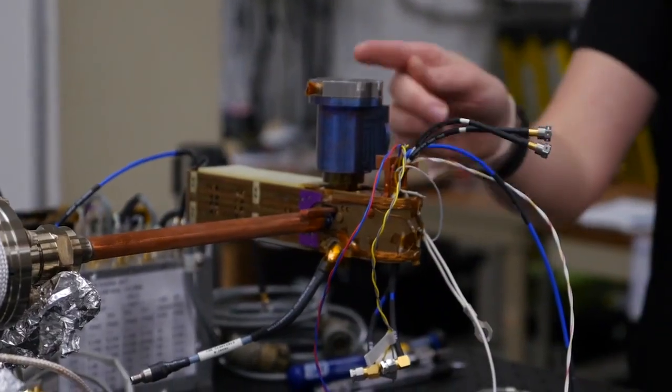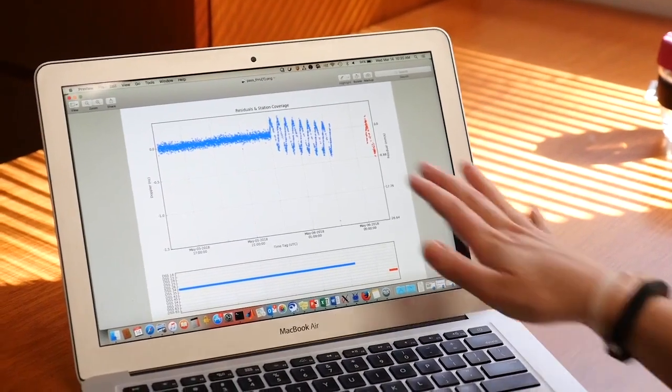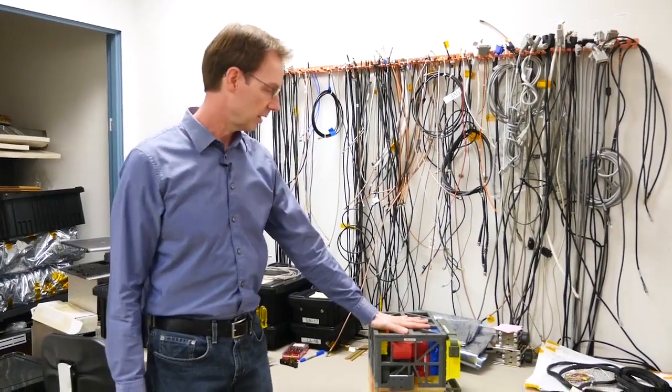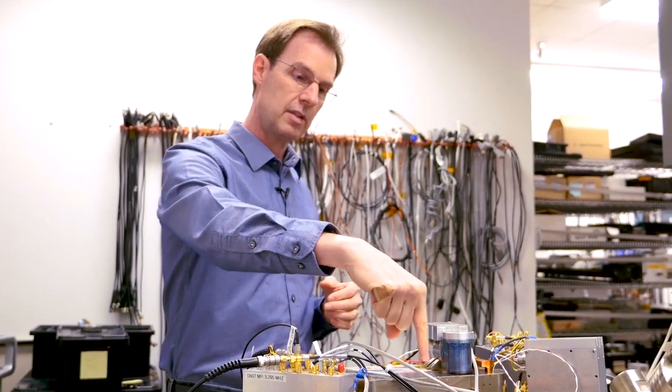Atomic clocks are used onboard GPS satellites that orbit the Earth. But even they must be sent updates two times per day to correct the clock's natural drift.